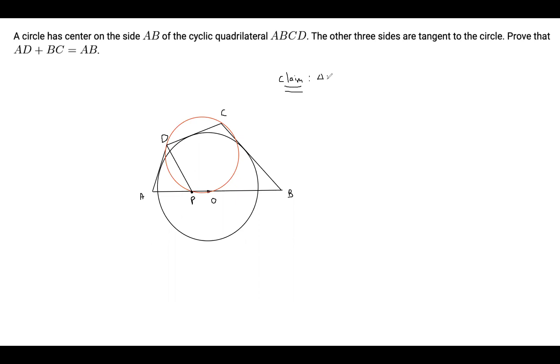So claim triangle ADP is isosceles. Okay, and I am going to mark this angle APD over here in blue. So we're going to call this angle theta. So angle APD equals theta. So angle BPD equals 180 minus theta. And this is equal to angle OPD because B, O, and P are collinear. So angle OPD equals 180 minus theta.